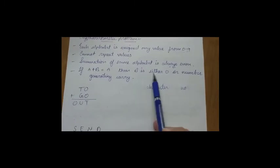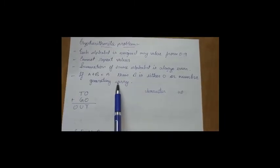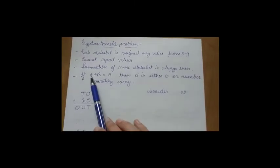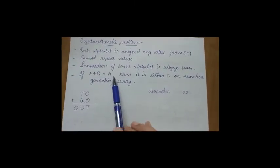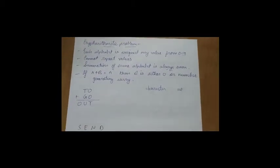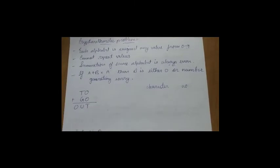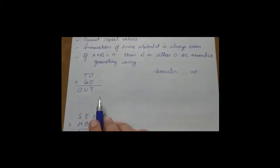The fourth rule: if A plus B equals A, then B is either 0 or any number that generates a carry. For example, 2 plus 10 gives 2 with carry 1. Now let's see some examples. The first one is TO plus GO equals OUT. Let's start assigning some values to characters.